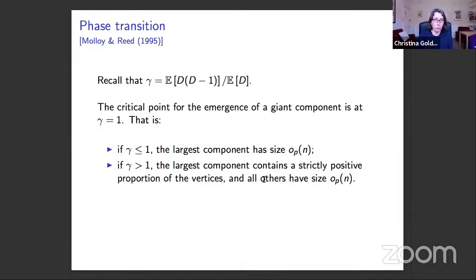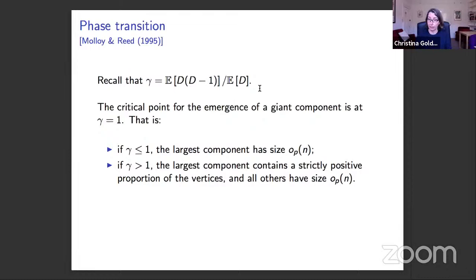One of the most important questions about this graph model is: does it possess a giant component? Is there a macroscopic proportion of vertices all connected in one component, or are the connected components only small? The parameter gamma provides the critical point for emergence of a giant component. If gamma is less than or equal to one, the largest component is microscopic — a vanishing proportion of vertices. If gamma is bigger than one, the largest component contains a strictly positive proportion of vertices, and all other components are tiny by comparison.